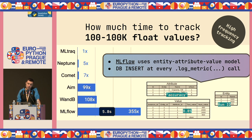MLflow relies on what is called the entity-attribute-value model, where basically every time you track a value, you are appending rows in different tables, which is quite expensive.